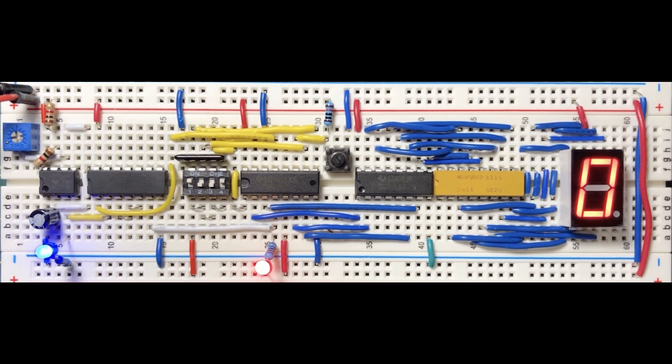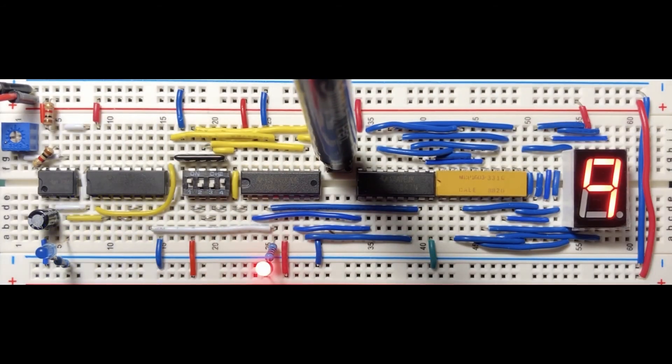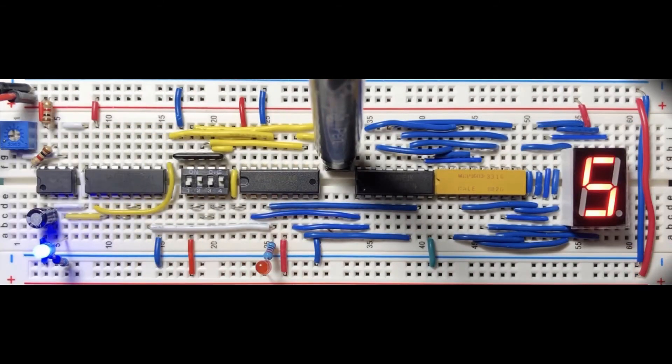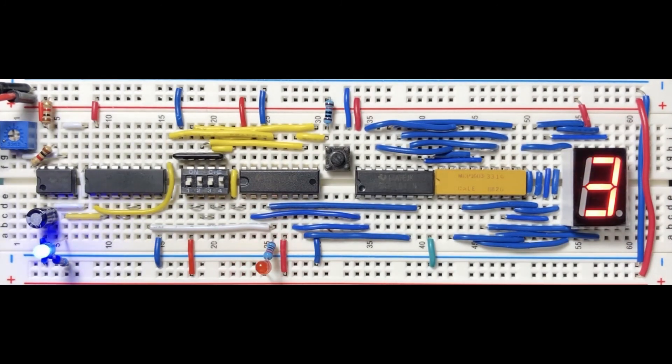Now for a quick demo of the programmable countdown timer circuit. First we have a countdown from 9 to 0. Next we have a countdown from 5 to 0.